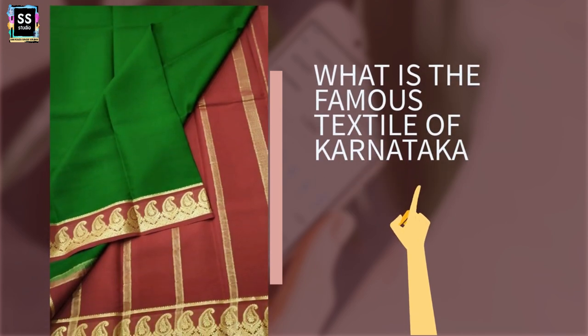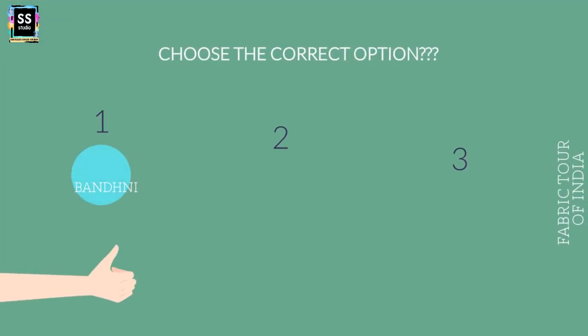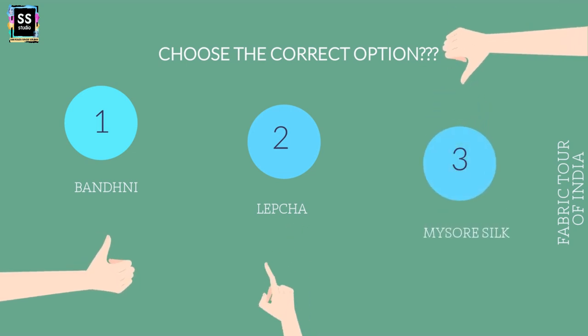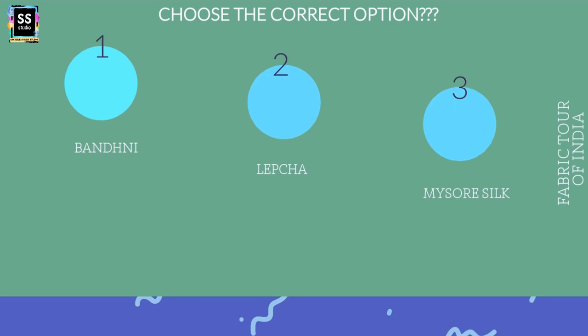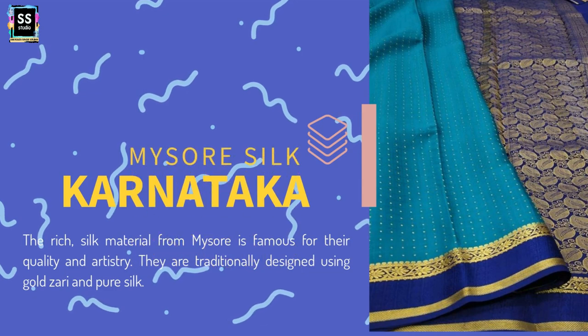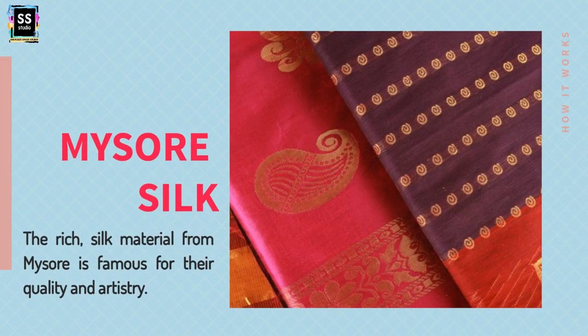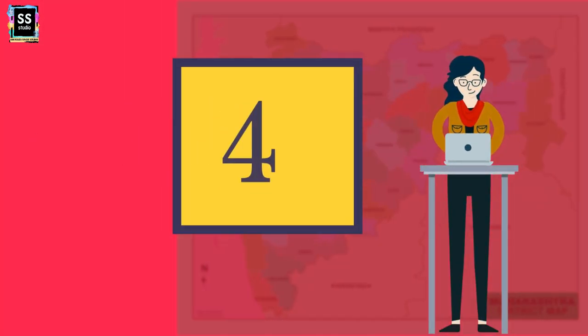State 3 on the list: The state is Karnataka. Do you have any guesses for the famous textile? Is it Bandhani? Is it Lepcha? Or is it Mysore Silk? It is Mysore Silk from Karnataka. It is a rich silk material famous for its quality and artistry, very much worn by the people of Karnataka and very prominent in their wardrobe.